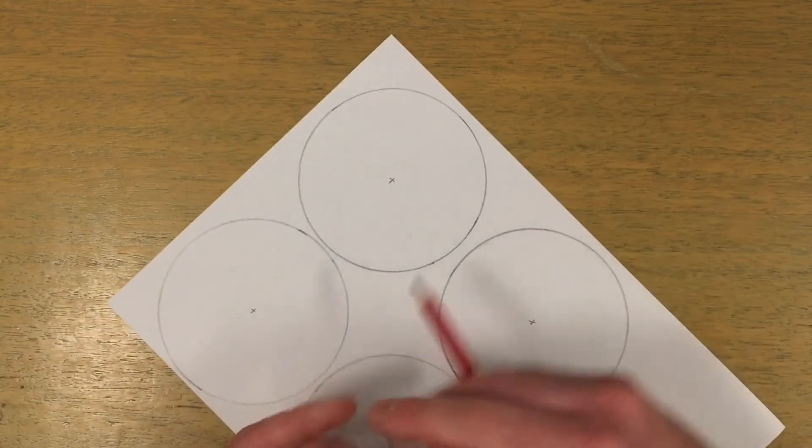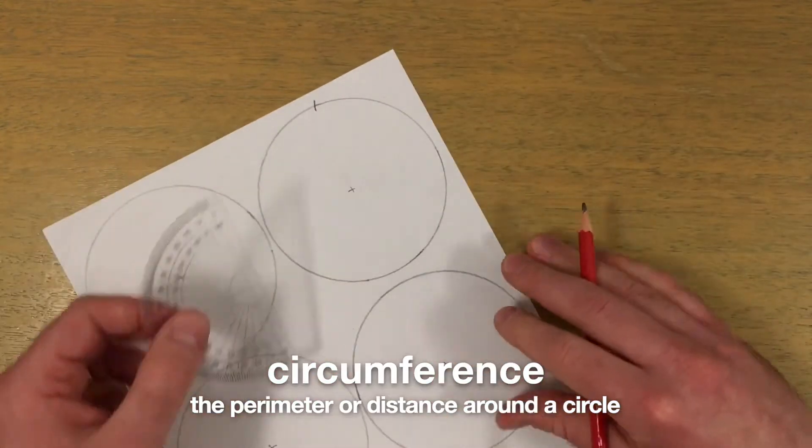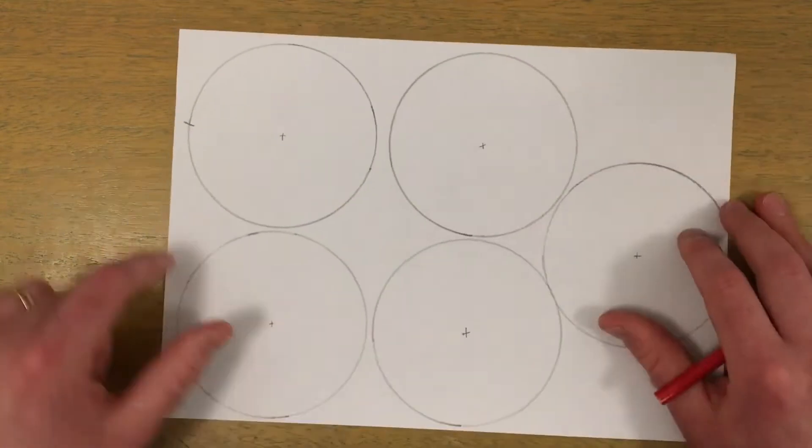Start by making a mark anywhere around the circumference. To make the three points of the triangle, we will measure equal angles between each point or vertex.